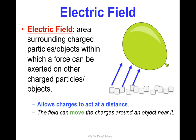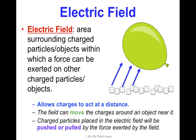The field can also move the charges around an object that is near to it. Charged particles placed in the electric field can be pushed or pulled by the force exerted by the field. Clearly, if these pieces of paper are attracted to the balloon and are picked up by it, they must have been oppositely charged from the balloon. If they were repelled, they would have a like charge — reviewing those charge rules we just discussed.